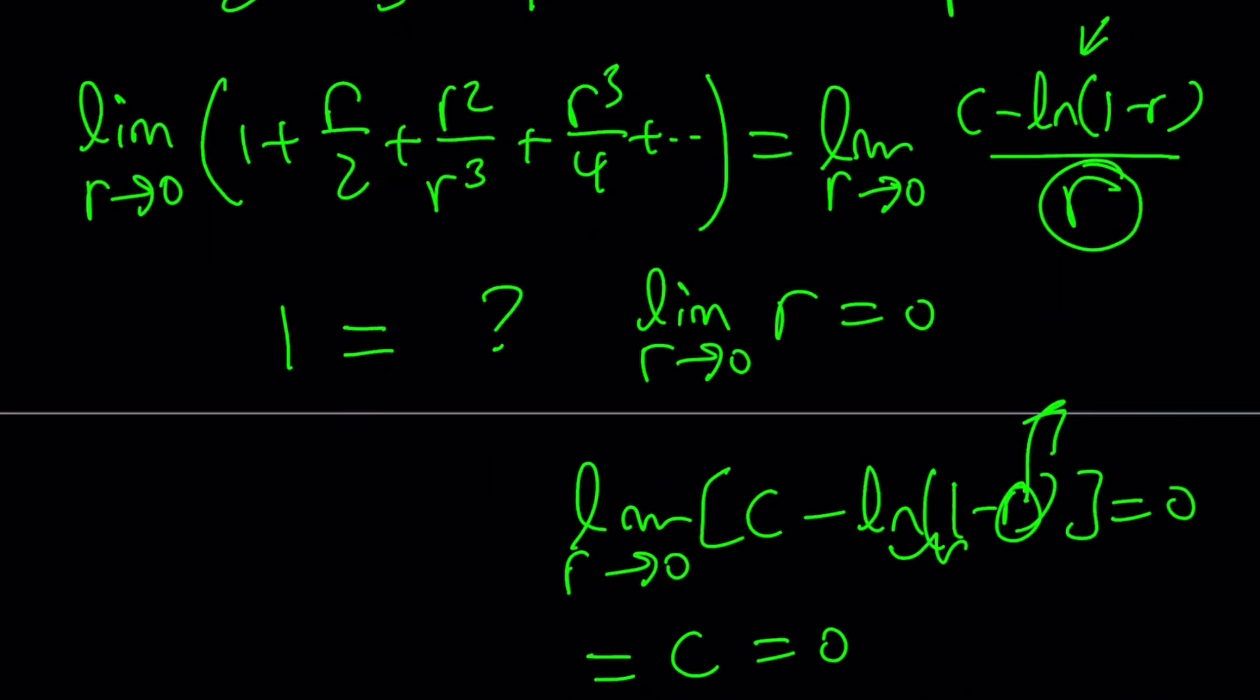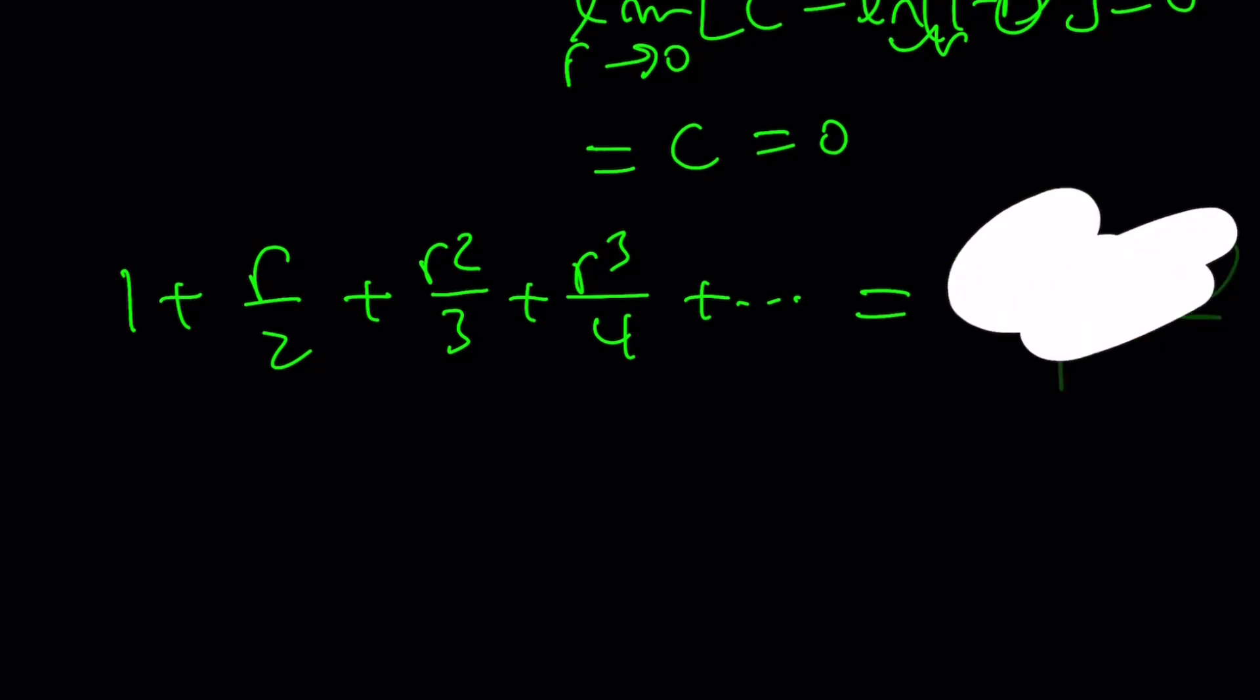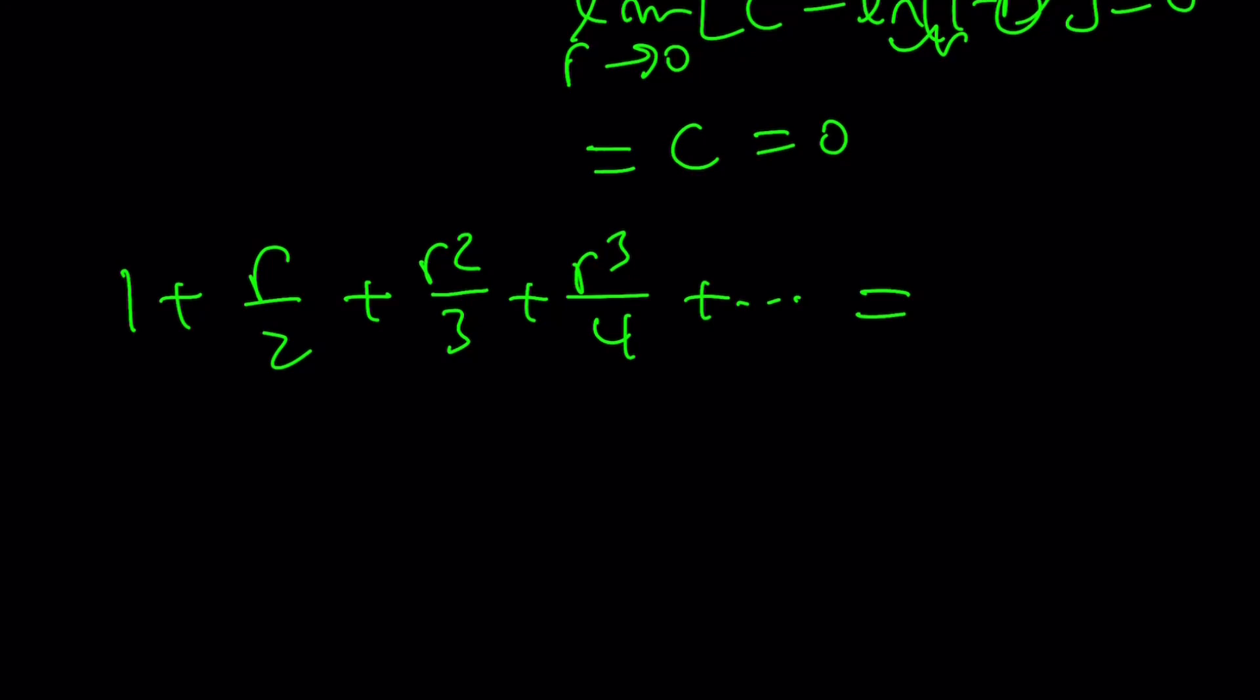So now our sum is going to turn into the following: 1 plus r over 2 plus r squared over 3 plus r cubed over 4. Since c is equal to 0, this sum is just going to equal c minus ln of 1 minus r over r. But c is 0, so we can just write this as negative ln of 1 minus r over r. And this brings us to the end of this video.